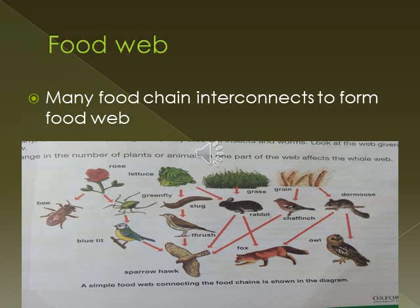Similarly, chicks not only eat grain — they also eat insects and worms. A change in the number of plants or animals in one part of a web affects the whole web.